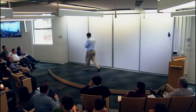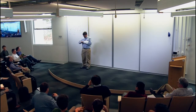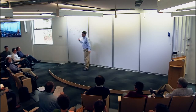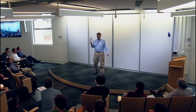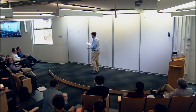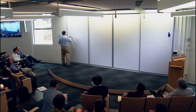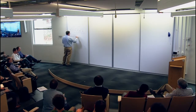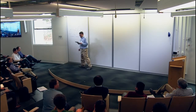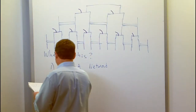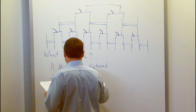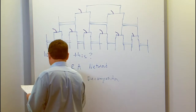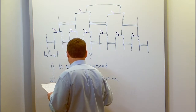Let me start with this picture. The question is: what does this represent? For many people in the audience, they might say right away this is one of the first things drawn to describe the MERA network. But a second possibility is a wavelet decomposition, and the third thing is a holographic mapping.